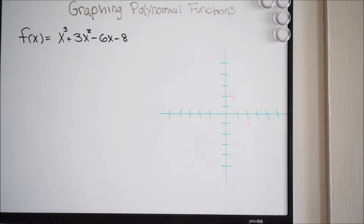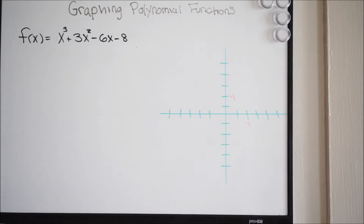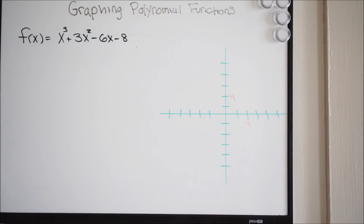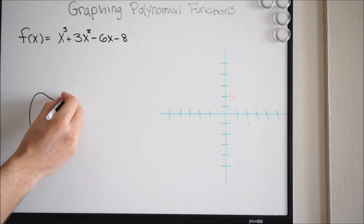Getting into this problem, the first thing we want to do is determine what type of behavior this graph is going to have. We want to determine the end behavior, that way we have a general idea of what we're looking for when we go about graphing it. So if we look at our leading coefficient, we know that it's going to be 1. Our leading coefficient is 1 and our degree is 3. So that means our leading coefficient is going to be greater than 0, and we have an odd degree.